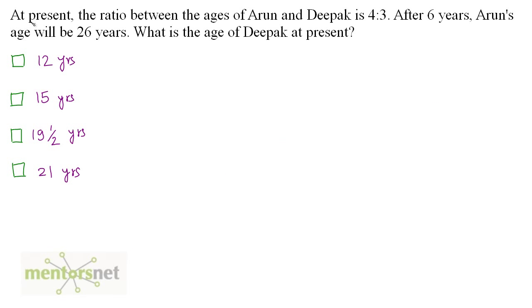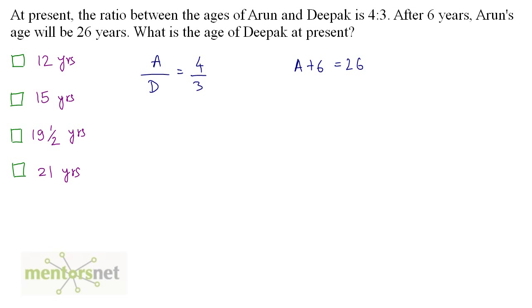The fourth question. At present the ratio between the ages of Arjun and Deepak is 4 is to 3. After 6 years Arjun's age will be 26 years. What is the age of Deepak at present? Let us consider the ages of Arjun and Deepak as A and D. So A by D is equal to 4 by 3. After 6 years Arjun's age will be 26, so A plus 6 is equal to 26. We get A is equal to 26 minus 6, therefore A is equal to 20 years.